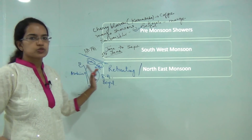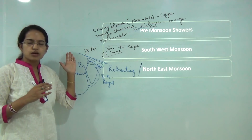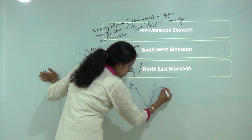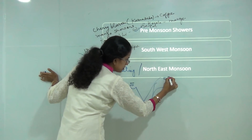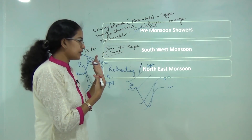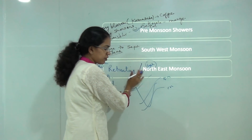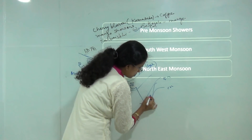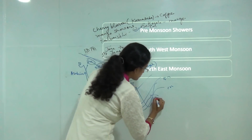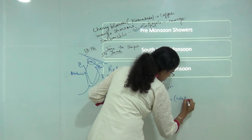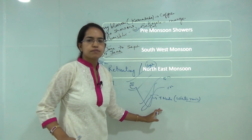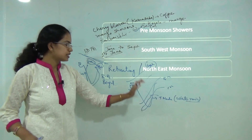The northeast monsoon, or retreating monsoon, occurs from September to December. The retreat starts from the westernmost part of India in September, with most of the retreat occurring by October and November. The coast of Tamil Nadu receives winter rainfall due to moisture-laden Bay of Bengal winds. The retreat finishes by mid-December.